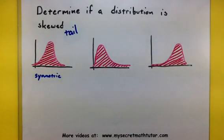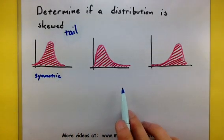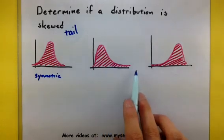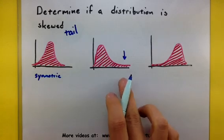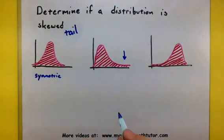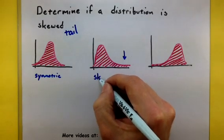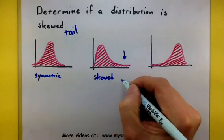Alright, not too bad. And the next one, notice how there is a tail of data on the right side. Since it has this tail of data on the right, I would say that this is skewed right.